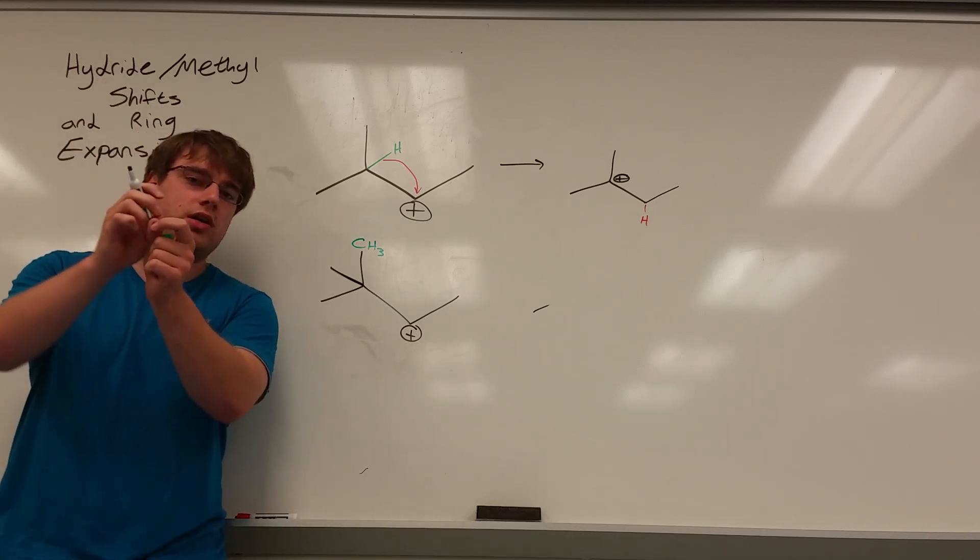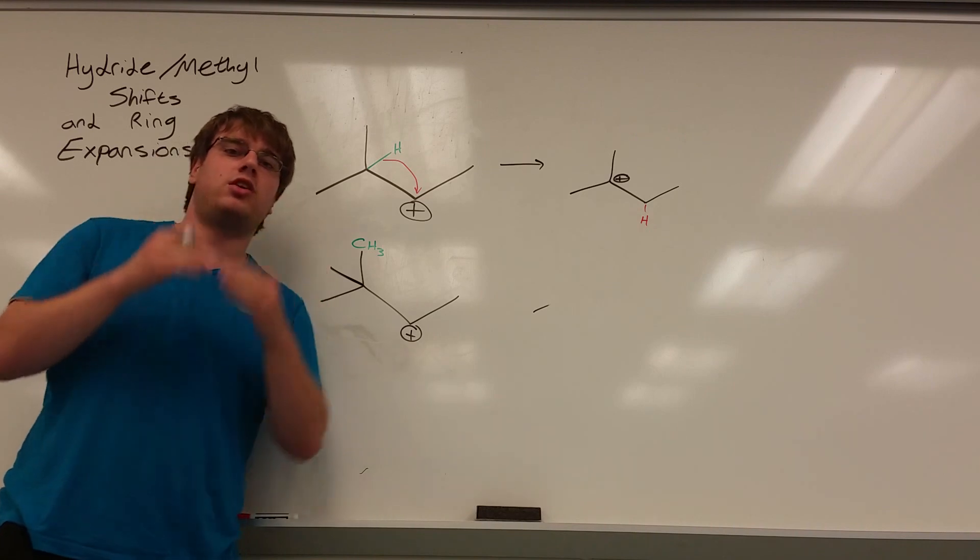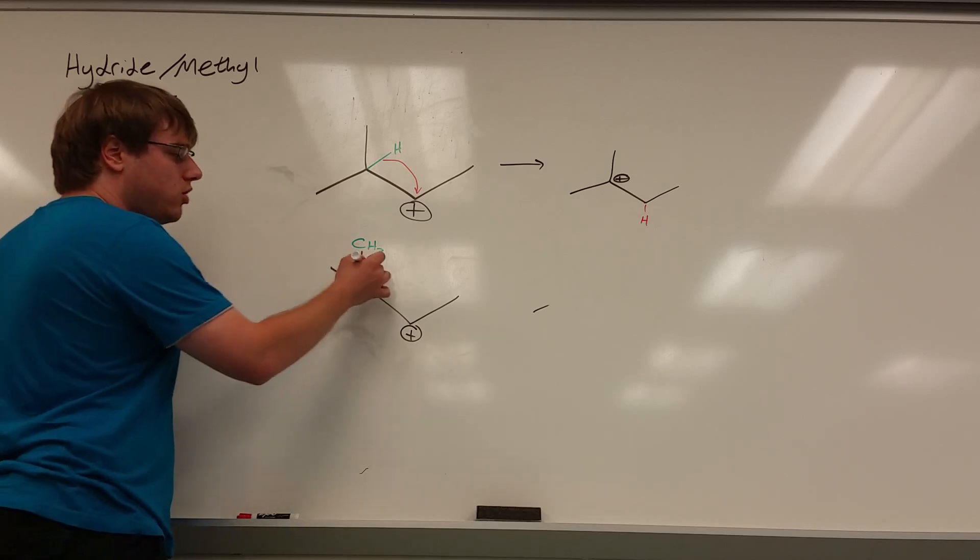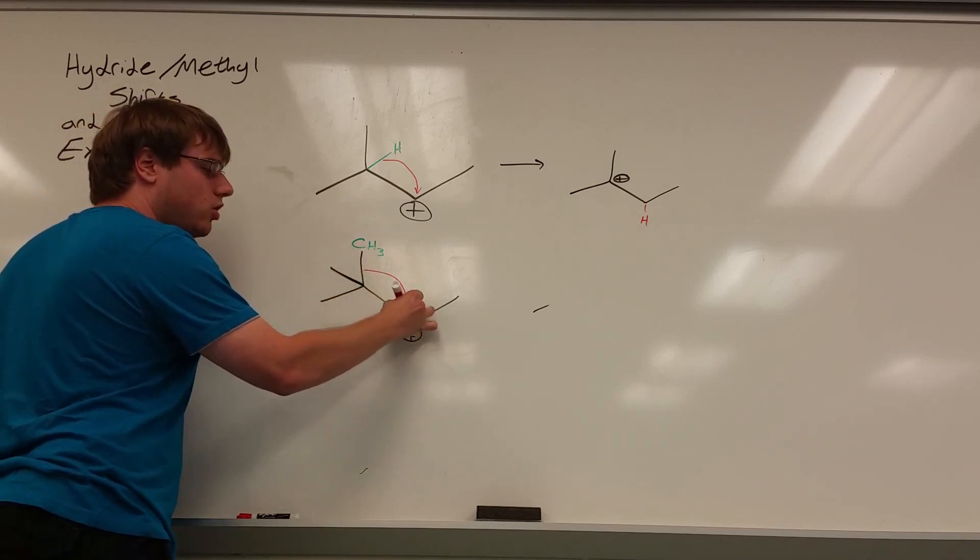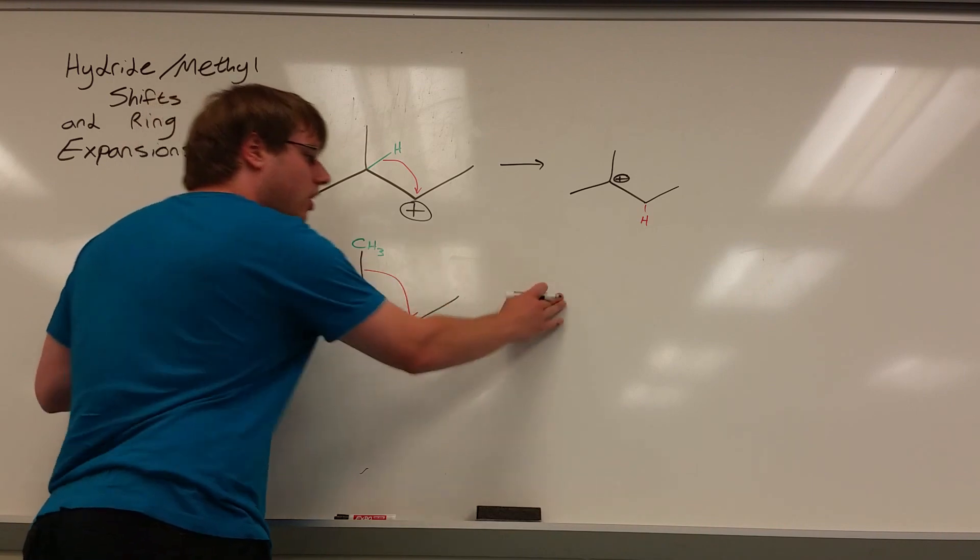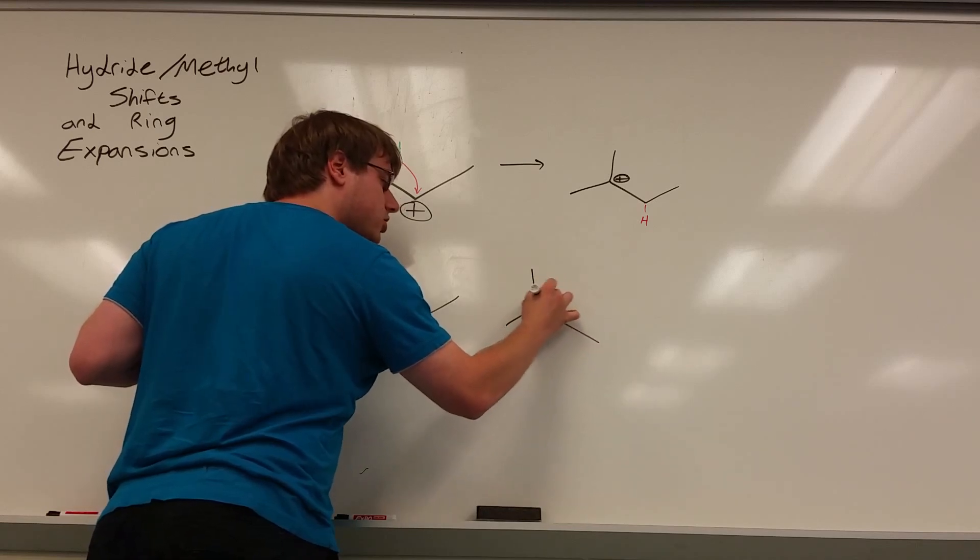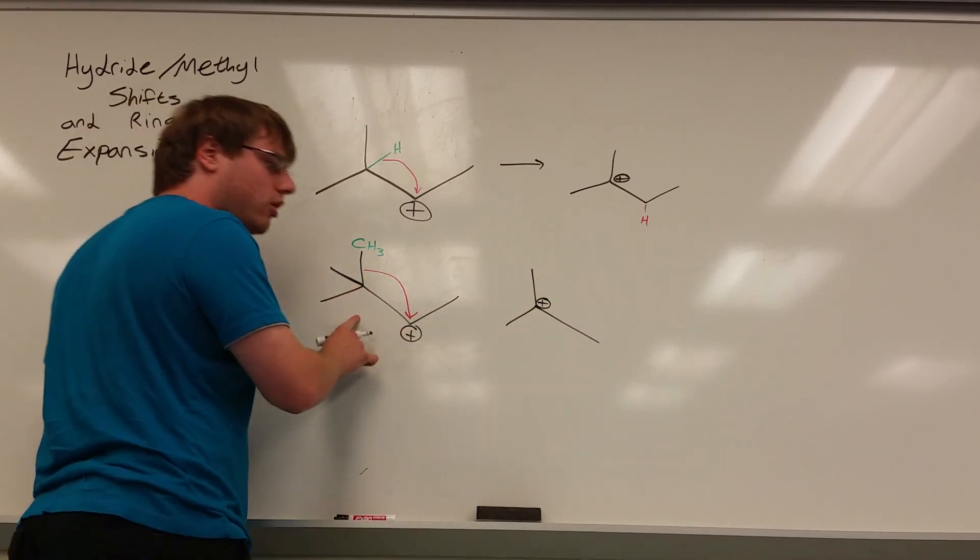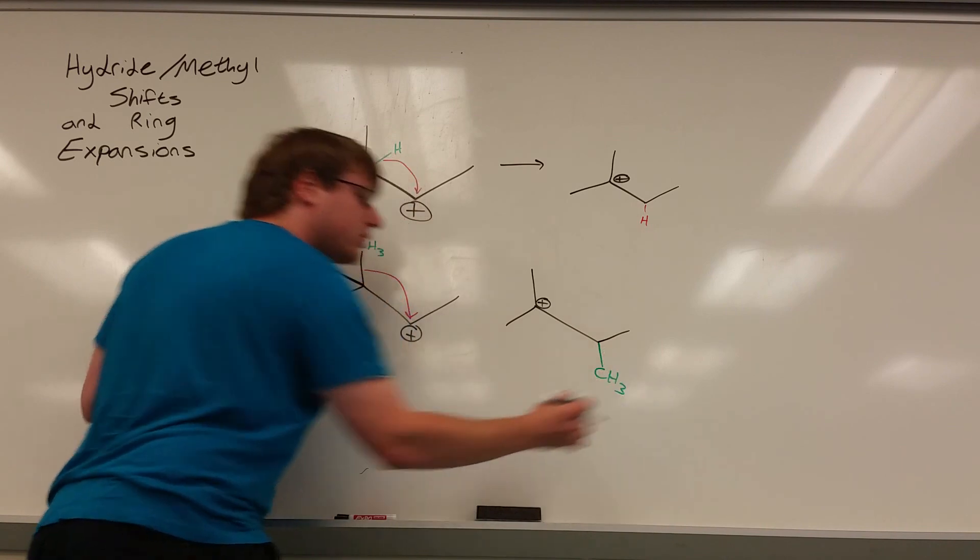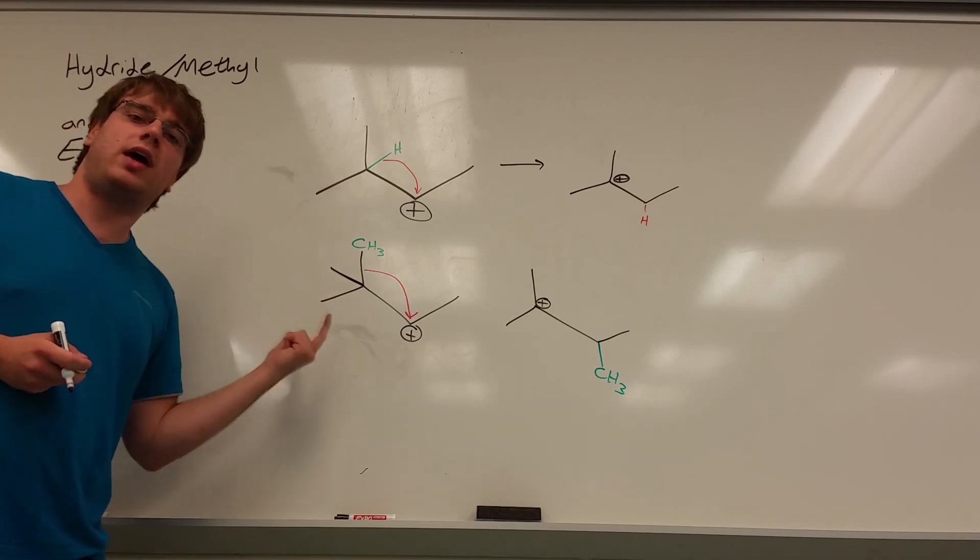For the record, hydride shifts are much easier to do than methyl shifts in terms of energetics. A hydrogen is small and easily removed; a methyl takes a lot more energy. So if you ever have the option of doing a methyl or a hydride shift, hydride shifts always get priority. That said, the mechanism behind how this works is exactly the same as the hydride shift. You draw from the bond of the carbon to the carbon that's positive, and that's going to basically switch the positions of the carbocation with a methyl. The carbocation will now be on a tertiary carbon, and the carbon that was formerly positive will have that CH3 sticking off of it.